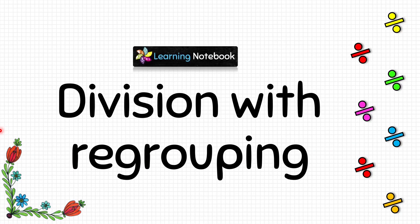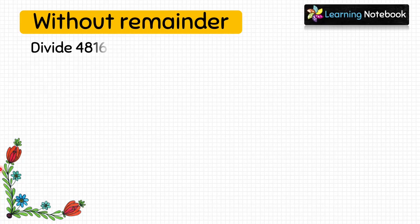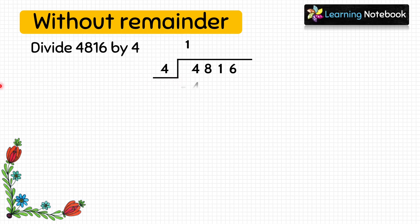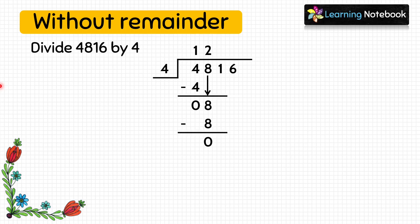Now we will do division with regrouping. The question is: divide 4816 by 4. To start the long division, let's form a tent and put the dividend 4816 inside the tent and the divisor 4 outside. Take a look at the first digit — it is 4, which is equal to the divisor, so we can start the division. 4 into 1 equals 4, and 4 minus 4 equals 0. Copy the next digit 8. 4 into 2 equals 8, and 8 minus 8 equals 0.